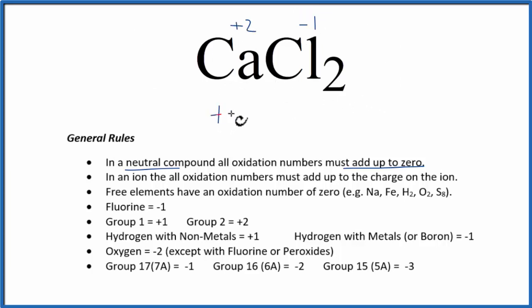So plus two plus the minus one for the chlorine, but we have two chlorines. That should equal zero. So two minus two, that equals zero.